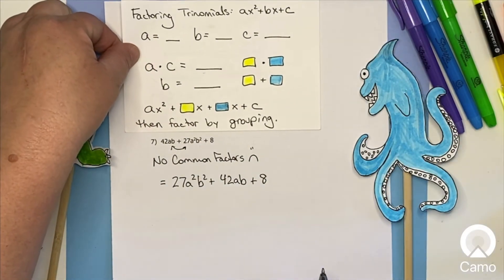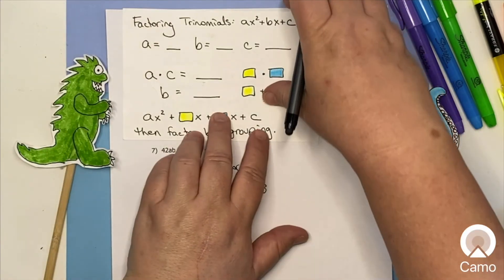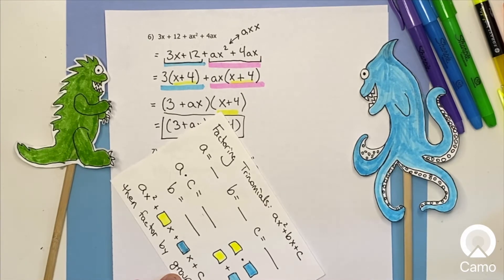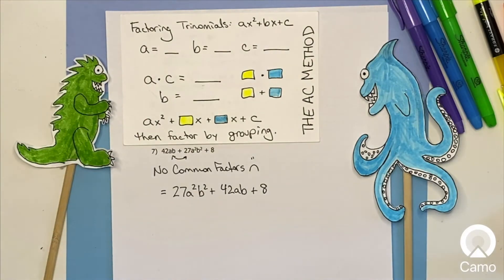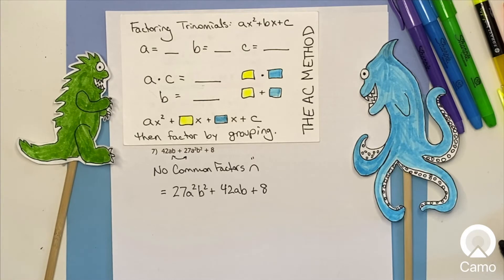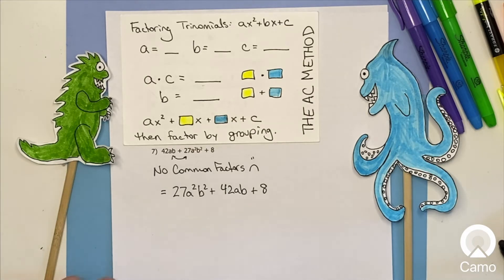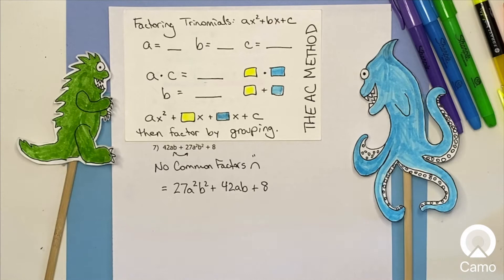This is the AC method. It's a way of factoring trinomials that's a little faster than trial and error. As I mentioned, it helps you get through the problem, but it doesn't necessarily make you faster at factoring in the future. The trade-off is: if you do the hard work you get better at it; if you take shortcuts you go faster but don't always improve. But here's how to do it.